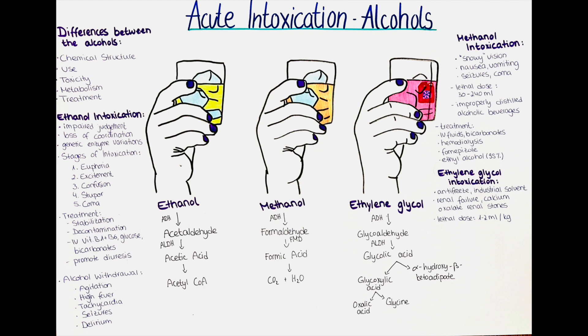Even low levels of ethanol consumption can produce some symptoms of intoxication such as impaired judgment, decreased coordination, slurred speech and altered mood. The amount of ethanol needed to produce intoxication symptoms varies from person to person depending on factors such as body weight, muscle mass, age, metabolism and tolerance to alcohol. For example, consuming one or two drinks within a short period of time can produce these effects in some people.